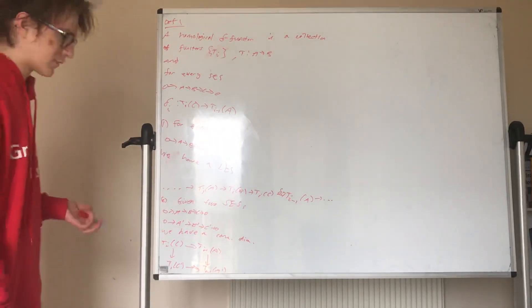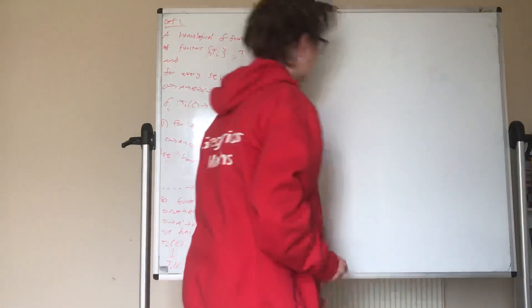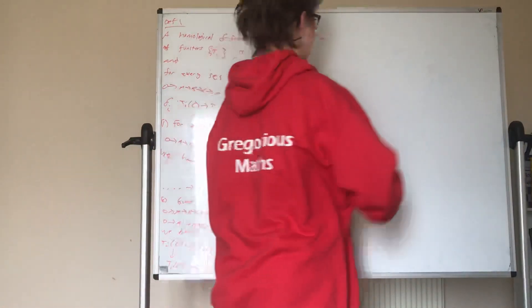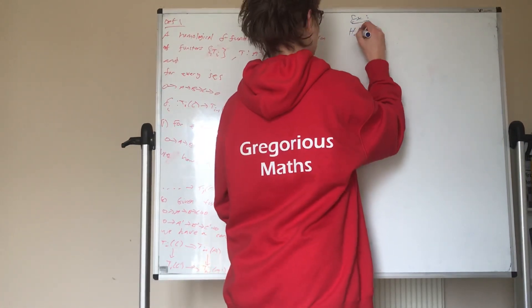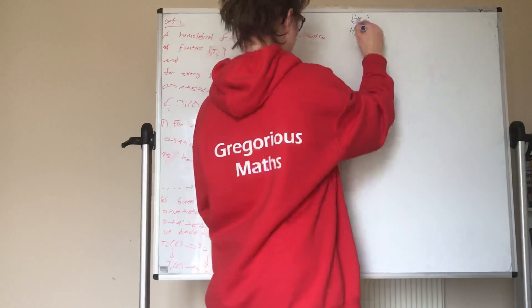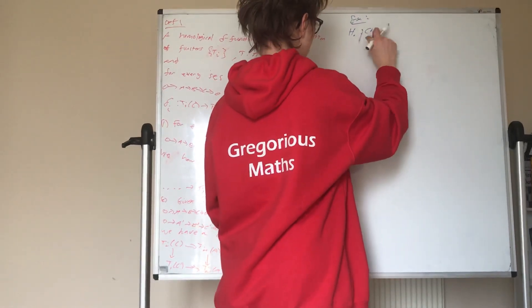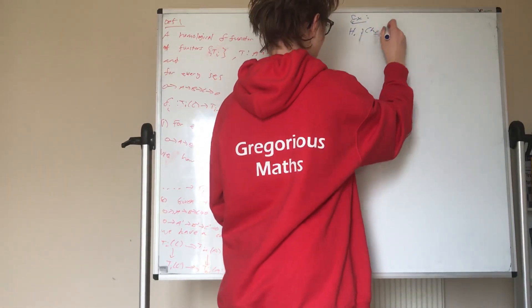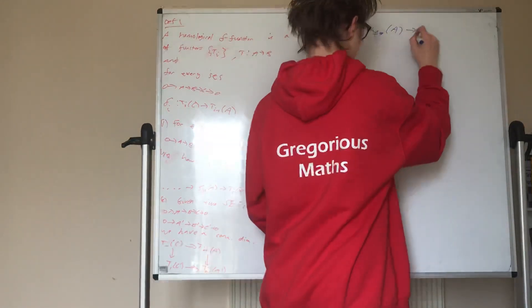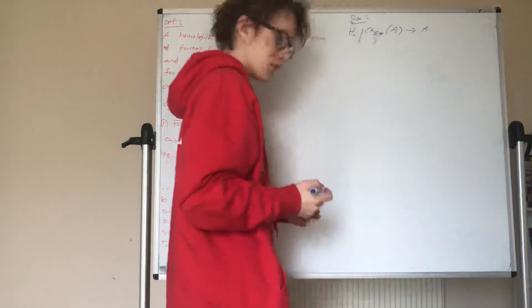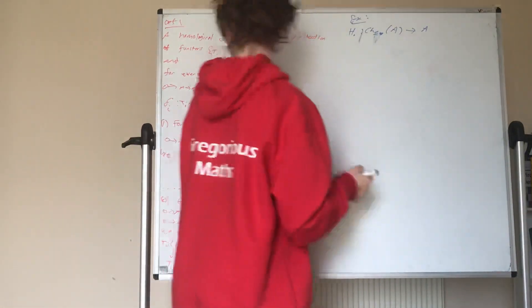Now, the most natural example of a delta functor would be homology, which goes from the category of chain complexes with values in some abelian category A, and outputs an object of that abelian category A. This is a homological delta functor.